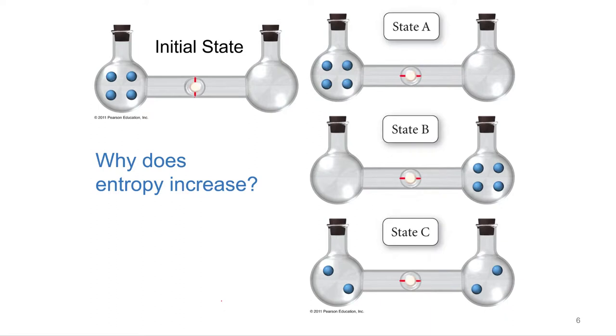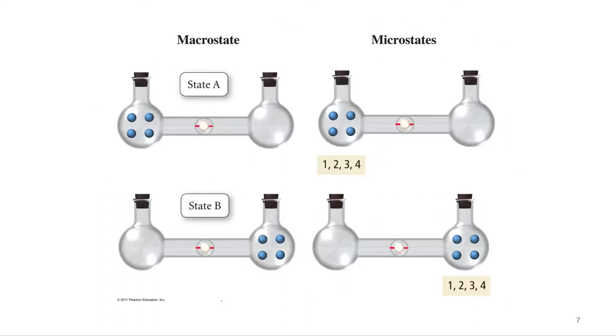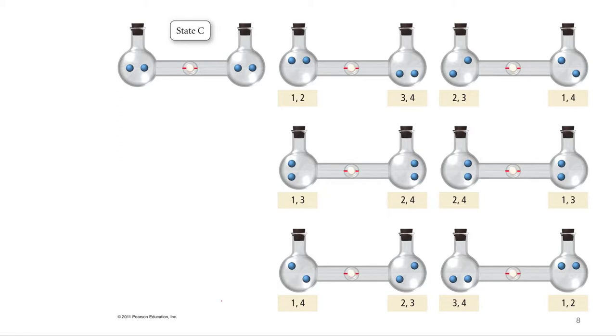A and B can happen. It turns out C can happen more often. That's really what it is. C can happen more times if we think about each gas molecule as an individual gas molecule. And if we put a number on them. So if we number them one, two, three, four, the A and B states can only happen one way. All four stay or all four go. That's it. But C can happen a lot more different ways. One and two can stay, three and four can go. Two and three can stay, one and four can go. It turns out that there's six different ways that C can happen.